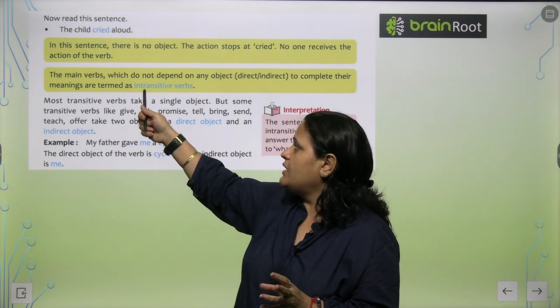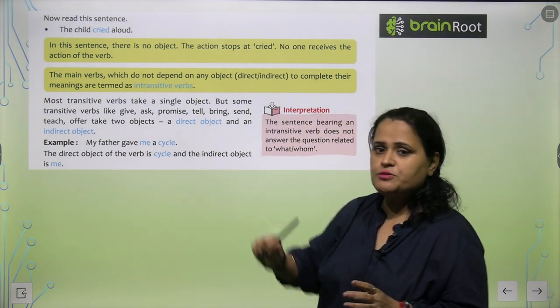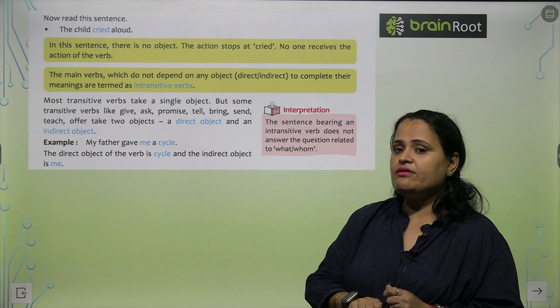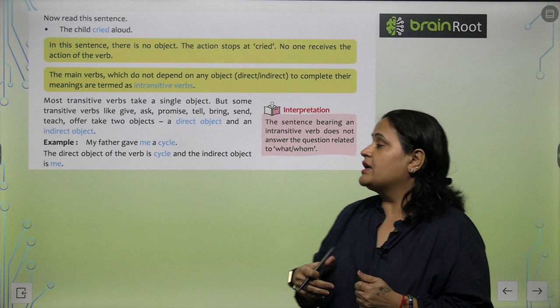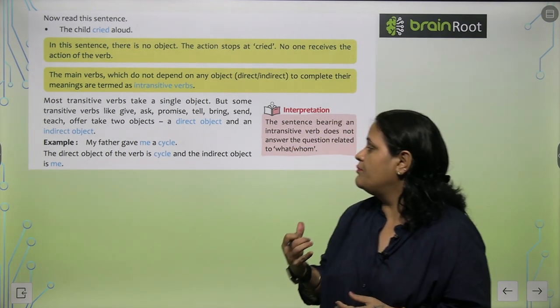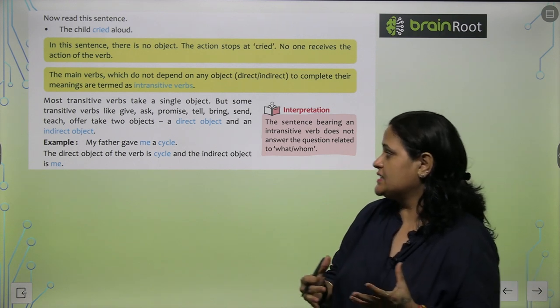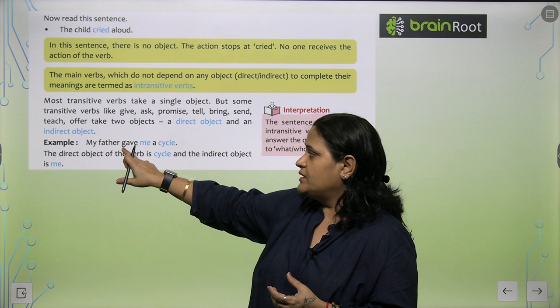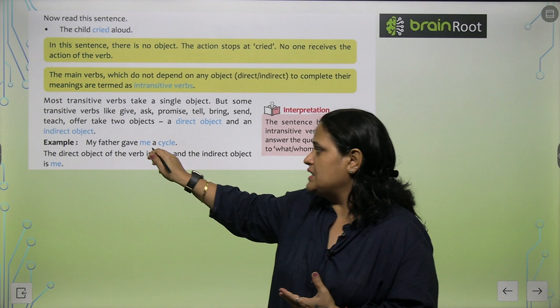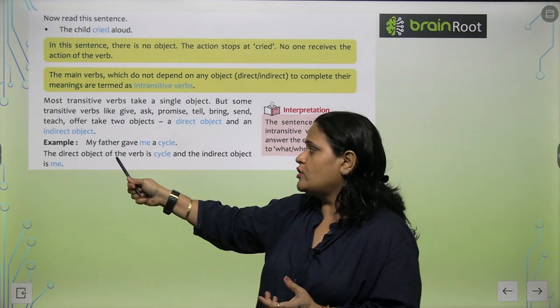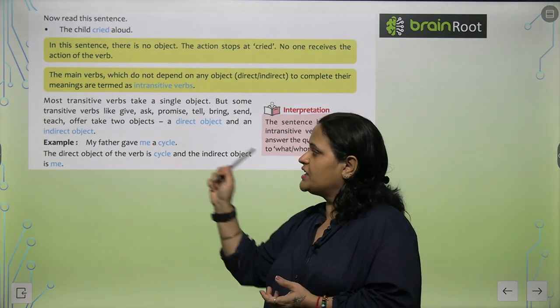Most transitive verbs take a single object, but some transitive verbs like give, ask, promise, tell, bring, send, teach, offer take two objects. Jaise ke my father gave me a cycle. Here what objects do we have? Me also and cycle also. The direct object of the verb is cycle and the indirect object is me.